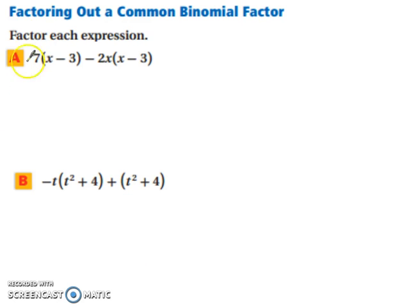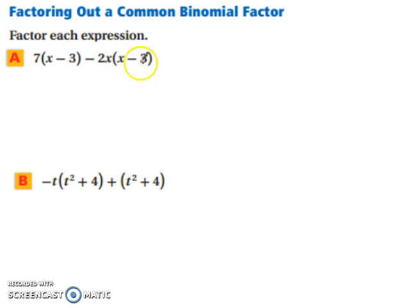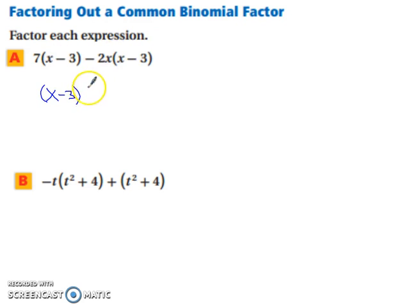Let's step it up a notch. Now we're going to factor out a common binomial factor. Looking at example a, notice how you have x minus 3 in both pieces. You're going to factor that out, leaving x minus 3 on the outside. Then what's left forms your next set of parentheses: 7 minus 2x.